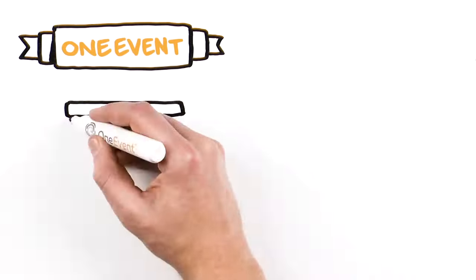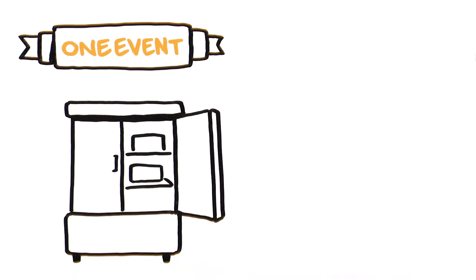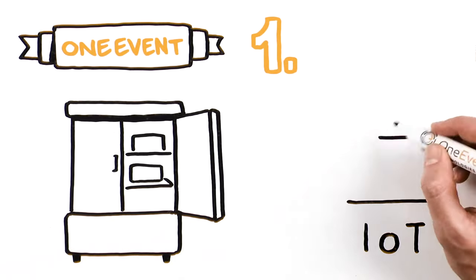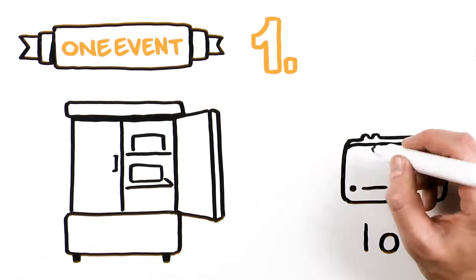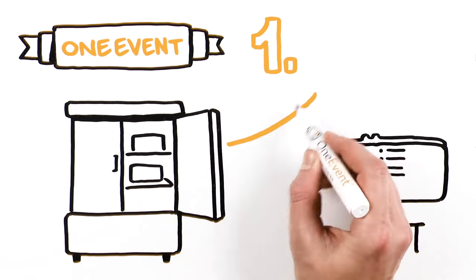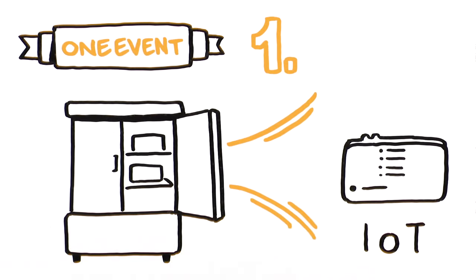OneEvent protects cold storage inventory in two ways. First, the OneEvent system, using Internet-of-Things technology, or IoT, provides remote, real-time monitoring through a cellular gateway which collects data from temperature and door sensors. Data is stored and analyzed in the cloud.